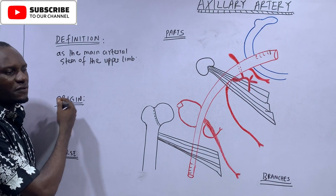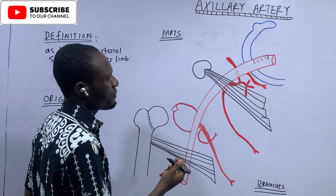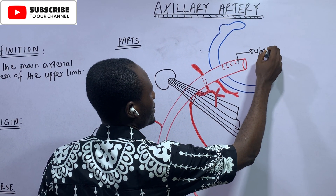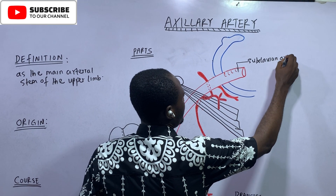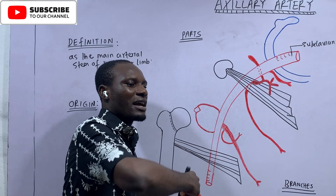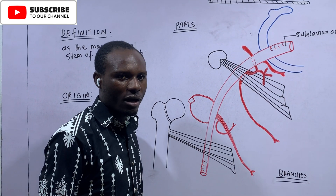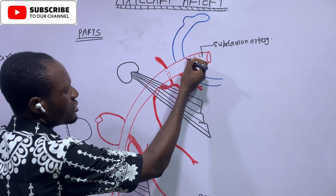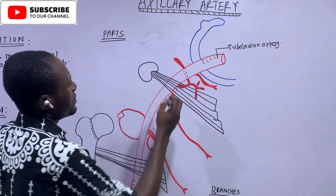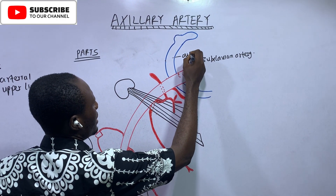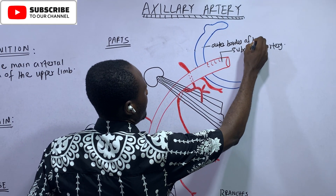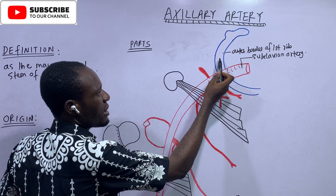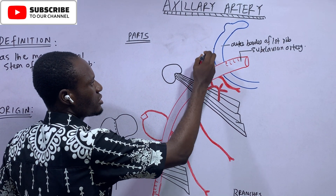Where does it originate from? What is the origin of the axillary artery? Looking at this diagram, we have the subclavian artery. The subclavian artery is one of those arteries arising from the convexity of the arch of the aorta. The subclavian artery descends immediately across the outer border of the first rib. Immediately the subclavian artery crosses the outer border of the first rib, the name changes to axillary artery.